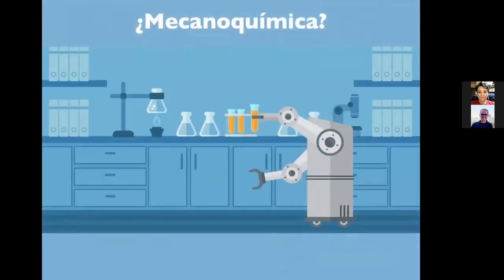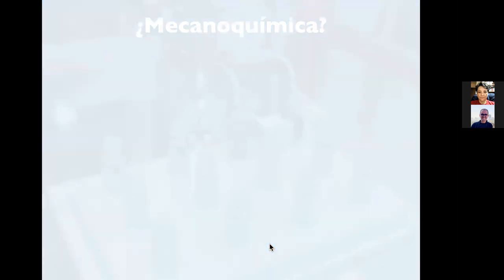Mecanoquímica puede sonar a diferentes cosas. Cuando piensa en algo mecánico, podría pensar en un robot. Yo sinceramente, hasta que no me metí con esto, no había llegado a pensar en algo que se llamara 'mecánica química'. Dado que la mayoría de las reacciones las hemos trabajado siempre en disolución, lo más que uno puede pensar en algo mecanoquímico es un sistema de agitación.